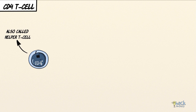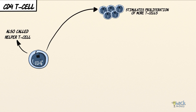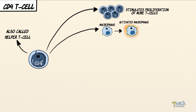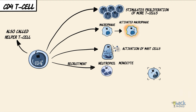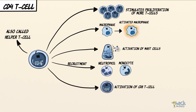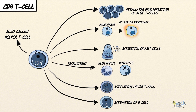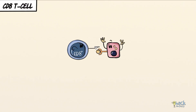By producing various cytokines, CD4 T cells stimulate proliferation of more T cells. They stimulate macrophages to become super alert and vigilant, are involved in the activation of mast cells, help recruit neutrophils and monocytes, activate CD8 T cells, and also activate B cells.